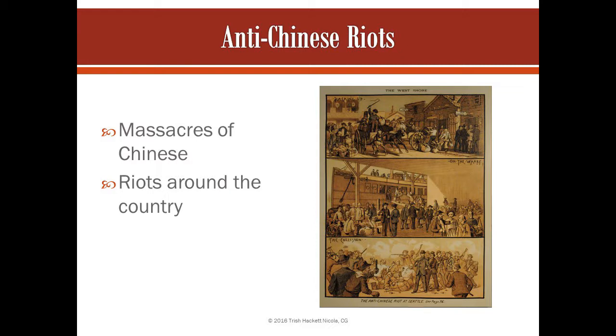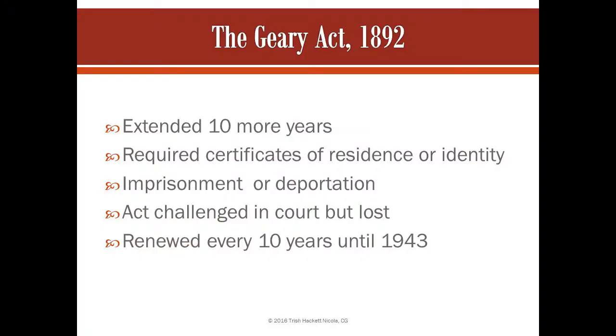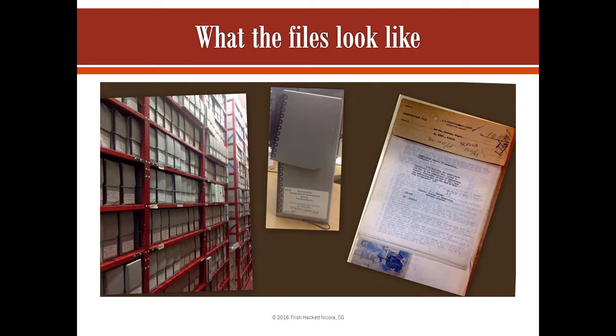Even after the act was passed, there was violence and riots — a massacre in Rock Springs, Wyoming, in Hell's Canyon, Oregon, riots all over Washington State, Denver, and Los Angeles, almost any place where they had a Chinese population. The act was only for 10 years, so in 1892 when it expired, they passed the Geary Act, which extended the act for another 10 years and required Chinese aliens to register and carry a certificate of residence with them at all times, under penalty of imprisonment or deportation. The Chinese Americans challenged the constitutionality of the act, but the U.S. Supreme Court ruled it was constitutional. The act was renewed every 10 years until 1943, so it was in effect for 61 years.